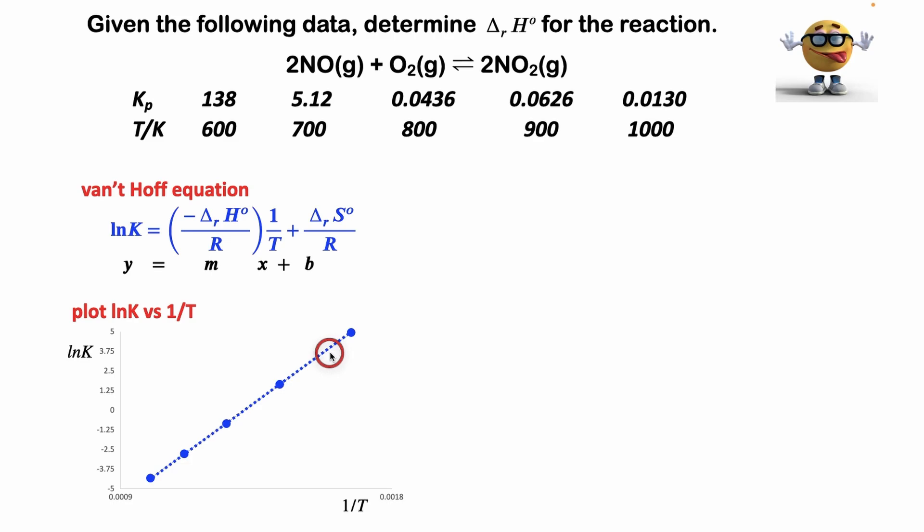I took a trendline in Excel, and that gave us y equals this number times x minus this number. I know that y is ln K because that's the equation I'm comparing it to, and x is 1 over T. So this is the slope - this is what we care about. The slope has units of Kelvin, and I know that because ln K is unitless.